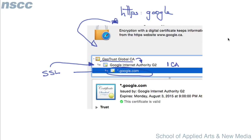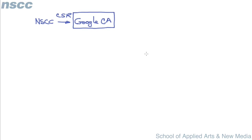Let's look at a little more detail of this chain of trust and show how it works. Suppose we have our website nscc.ca and it wants an SSL certificate. It's going to make a CSR — a certificate signing request — and it can make that to an intermediate CA. Let's suppose we go to Google CA, which is an intermediate CA.